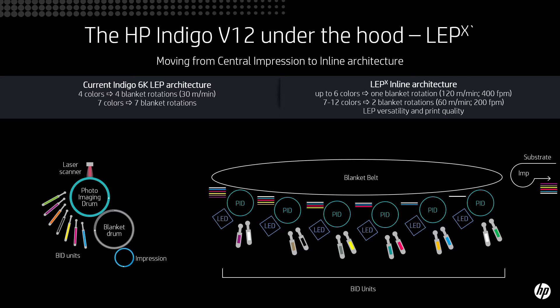If for some reason you would like more than six colors, because the V12 will have 12 colors pre-installed on the press - you would like to have a seventh color or an eighth color or up to 12 different colors - you will go through a second rotation of the blanket and then the speed will be 60 meters per minute.